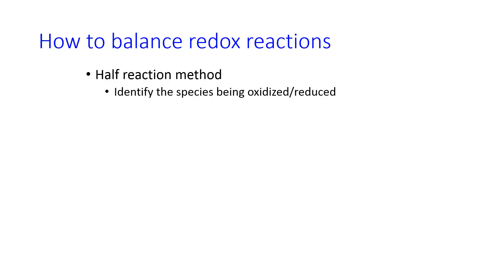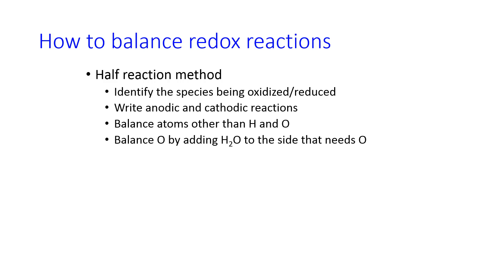First, we need to identify, based on oxidation numbers, which species is being oxidized and which one is being reduced. We then split up the overall reaction into the anodic and cathodic reactions. We balance atoms other than H and O, just using general mass balance criteria. We balance oxygen next by adding H₂O to the side that needs O. We do this for each half-reaction. And we balance hydrogen by adding H⁺ to the side that needs it. So now each half-reaction should be balanced with respect to mass.